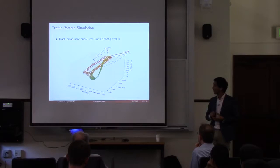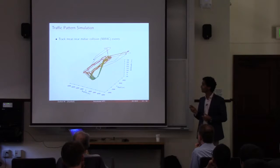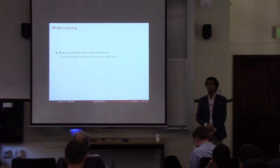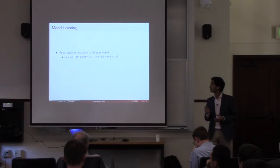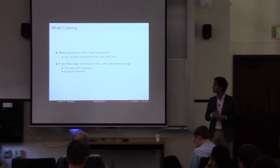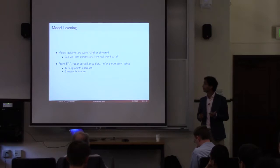This works well and gives us a tool to test algorithms. But we wondered: can we learn parameters for these patterns from real-world data? How do the locations of navigation goals depend on which airport you're flying at? We obtained data from the FAA with radar observations, and I'll show two methods for learning those parameters: the turning points approach and Bayesian inference.